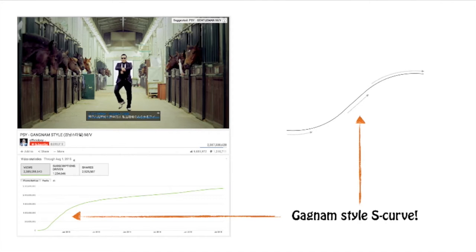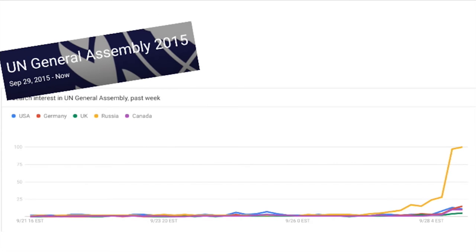As in this picture we see it with Gangnam Style, you see in the bottom left there that it has this kind of S-shaped pattern. And here we see it as Putin started talking to the General Assembly, how activity online around Russia went up and people started talking about it and it was really measurable.